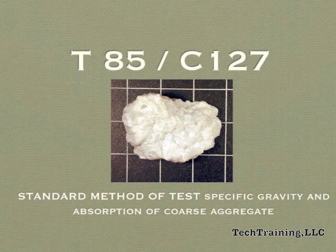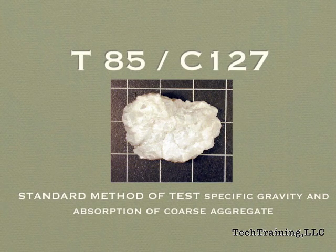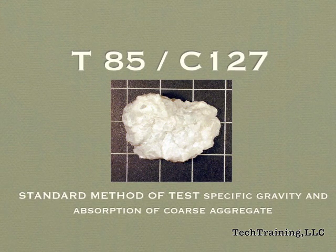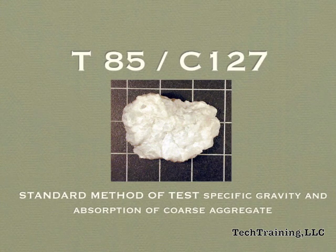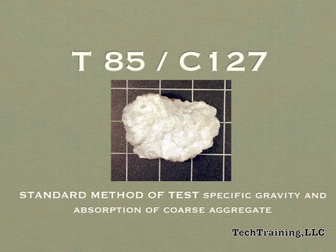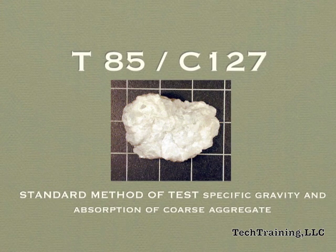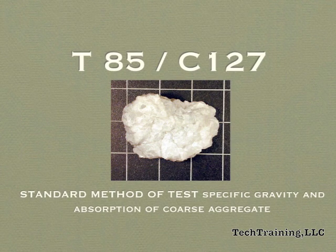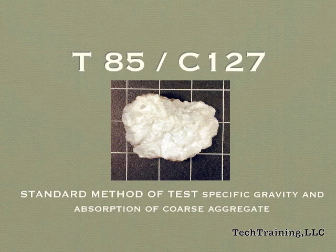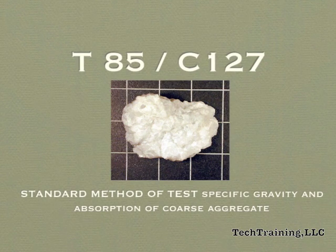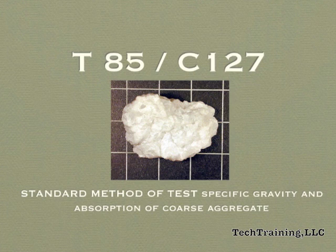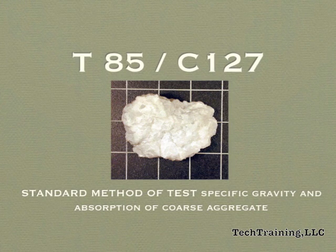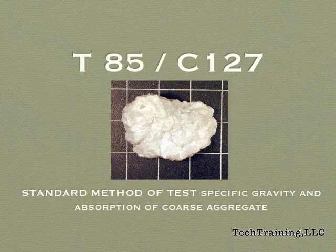AASHTO T85 and ASTM C127 are the standard methods of test for determining specific gravity and absorption of coarse aggregate. The purpose of the specific gravity test is to determine the physical properties of the coarse aggregate for concrete mix proportioning. A change in this value will change the amount of coarse aggregate in a given concrete mixture. Absorption is a measurement of water in the aggregate pores, and this value is critical to maintaining a consistent water-cement ratio.